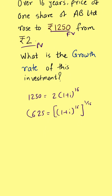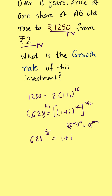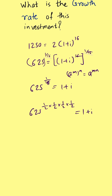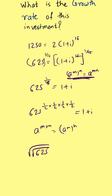Now we raise both sides to the power 1/16. Using the rule A^(M×N) = (A^M)^N, we get 625^(1/16) = 1 + i. We can write 1/16 as (1/2)×(1/2)×(1/2)×(1/2), so this becomes the square root of 625, taken four times in succession, which equals 1 + i.